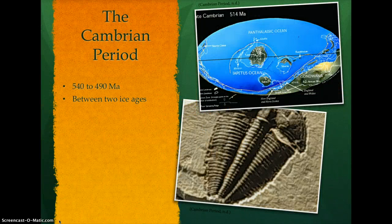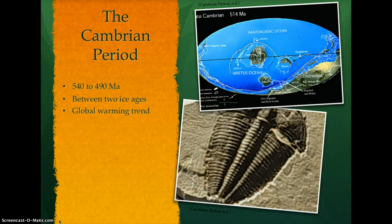Wedged between two ice ages, the Cambrian period began around 540 million years ago. During this period, there was a global warming trend, creating rising sea levels which covered much of the land. The Cambrian climate was warm, wet, and mild.